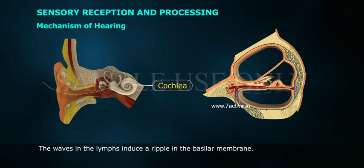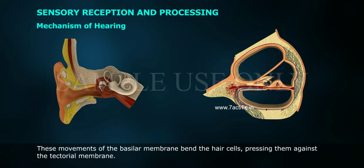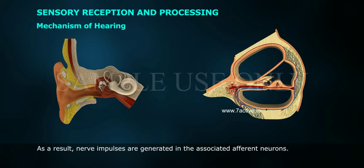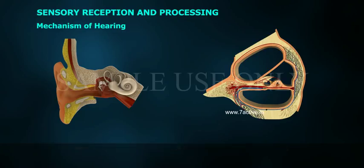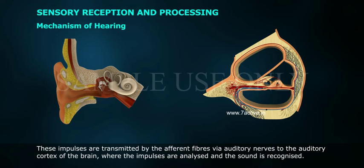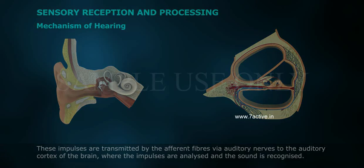The waves in the lymphs induce a ripple in the basilar membrane. These movements of the basilar membrane bend the hair cells, pressing them against the tectorial membrane. As a result, nerve impulses are generated in the associated afferent neurons. These impulses are transmitted by the afferent fibres via the auditory nerves to the auditory cortex of the brain, where the impulses are analyzed and the sound is recognized.